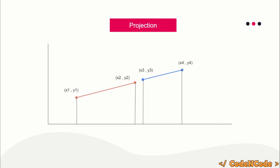This is how you find out whether two given line segments are actually intersecting or not. In the next lecture, let's solve a problem and implement the algorithm so we can test our code. We'll see how this can be implemented. That was all for this lecture — thank you for watching. If you have any suggestions or queries, you can post them in the comment section. Till the next video drops, keep coding. Thank you.